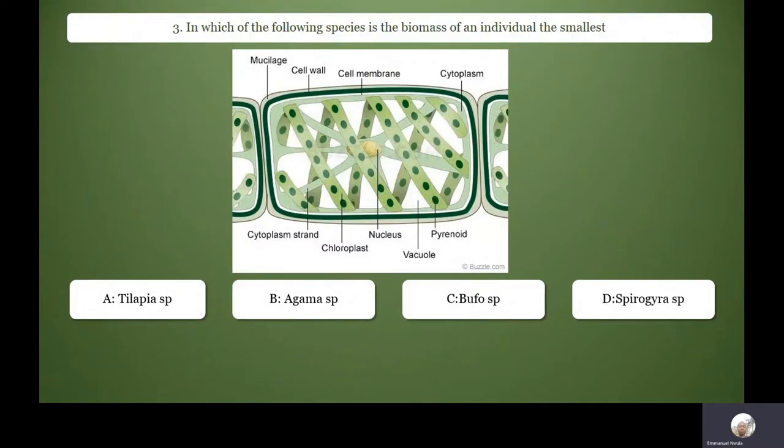In which of the following species is the biomass of an individual the smallest? If you weigh tilapia fish, if you weigh the agama lizard species, you weigh the toad (the Bufo species), you weigh spirogyra (one individual spirogyra filament), of course it will be the smallest. So D is the answer here.